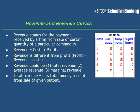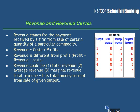Now revenue could be total revenue, it can be average revenue, or it could be marginal revenue. So there are broadly three categories of revenue: total revenue, average revenue, and marginal revenue.